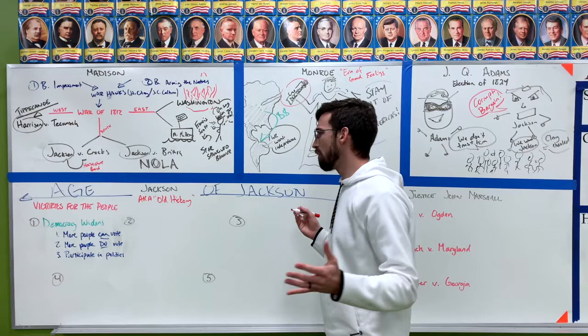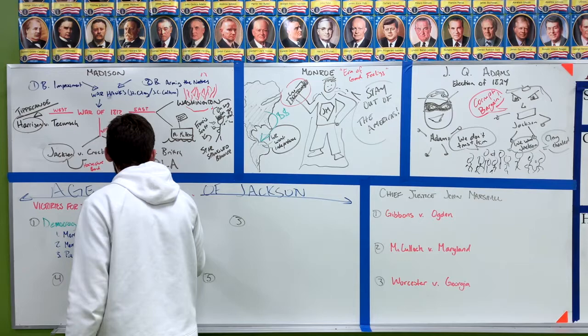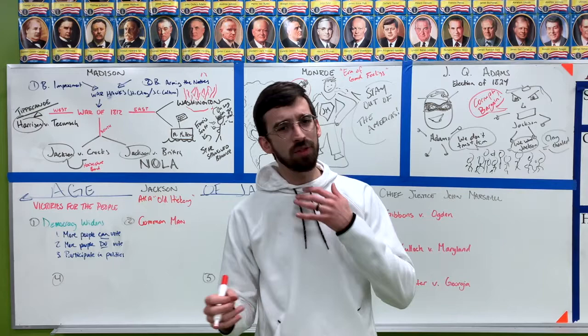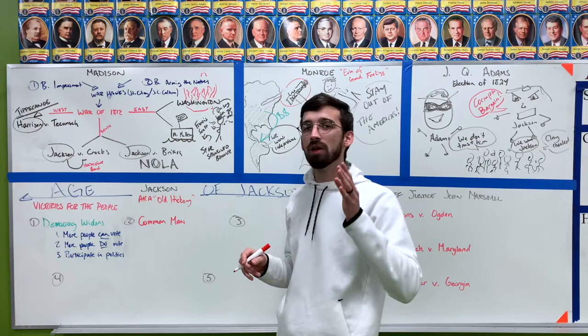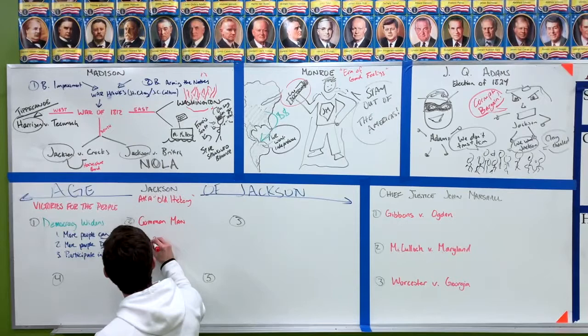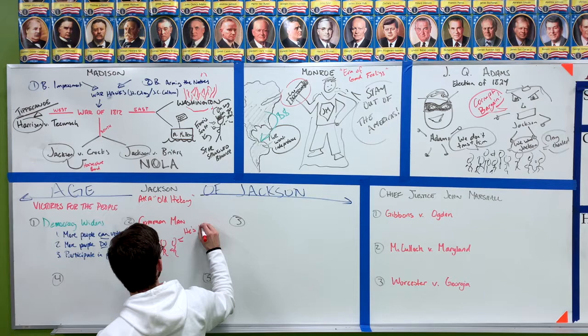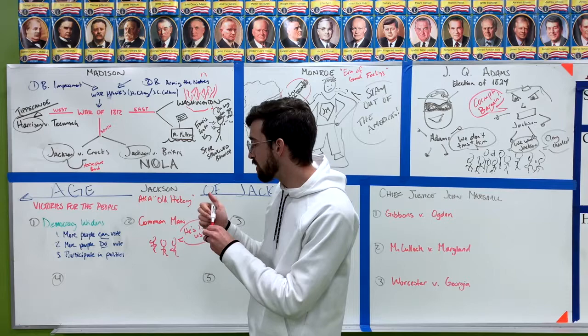Item number two: one of the big victories is that Andrew Jackson was a common man. That's a victory because people look at Jackson and think he's just like them. He was born from nothing — to quote Drake, he started at the bottom, now he's here. People look to the White House and finally see someone they can identify with, someone similar to them. He's a common man. That's victory number two.